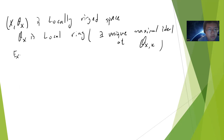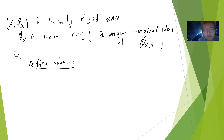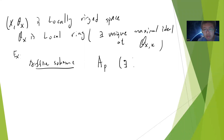Examples are very simple — it's the affine scheme. For the affine scheme, the stalk is A sub P, the ring localized at a prime ideal P, and the unique maximal ideal is P·A sub P.